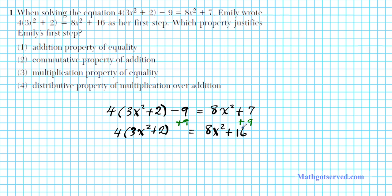She added 9 to both sides of the equation to cancel out the minus 9 over here. So since she added 9, this is addition — she added the same thing to both sides of the equation, which does not change the equality of the equation at all. Since this is addition, it's simply the addition property of equality.